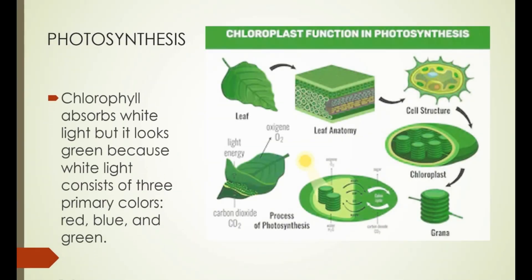The chlorophyll is built into the membranes of the thylakoids. Chlorophyll absorbs white light but looks green because white light consists of three primary colors: red, blue, and green. Only red and blue light are absorbed, making these colors unavailable to be seen by our eyes, while the green light is reflected, which makes the chlorophyll look green. However, it is the energy from the red and blue light that is absorbed and used in photosynthesis. The green light we can see is not absorbed by the plants and thus cannot be used to do photosynthesis.